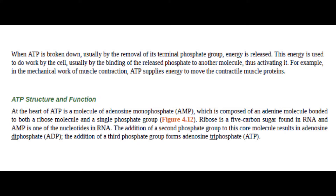When ATP is broken down, usually by the removal of its terminal phosphate group, energy is released. This energy is used to do work by the cell, usually by the binding of the released phosphate to another molecule, thus activating it. For example, in the mechanical work of muscle contraction, ATP supplies energy to move the contractile muscle proteins.